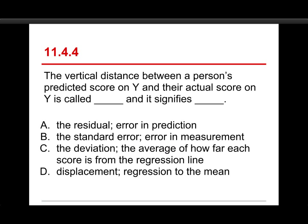Number four. The vertical distance between a person's predicted score on Y and their actual score on Y is called blank and it signifies blank. The choices are residual and error in prediction, standard error and error in measurement, the deviation and the average of how far each score is from the regression line, or displacement and regression to the mean. The answer is A, the residual and error in prediction.